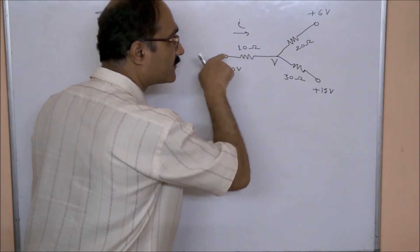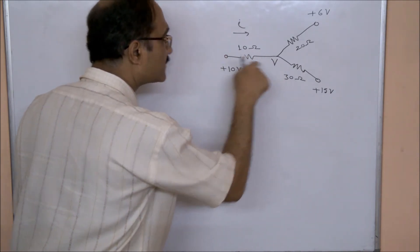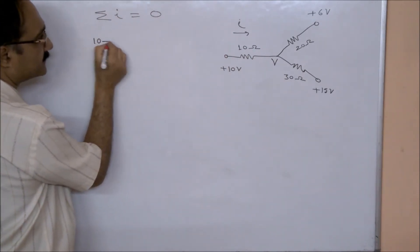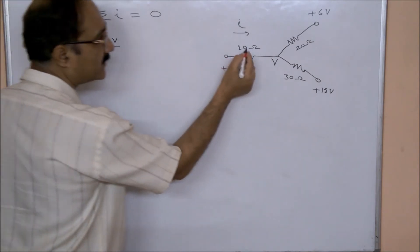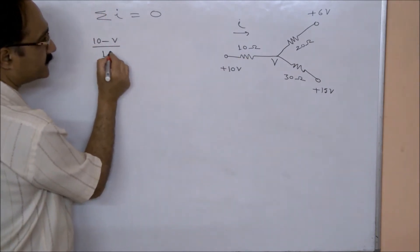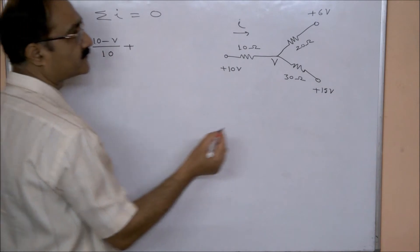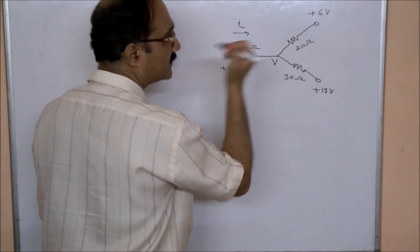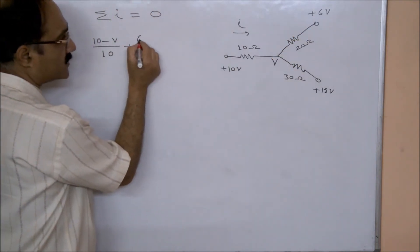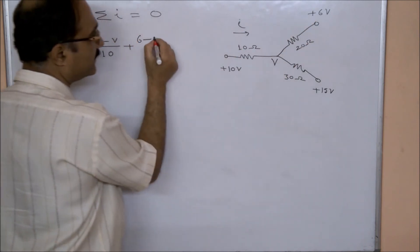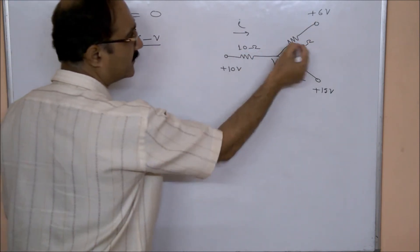Current coming from this side will be (10 - V) divided by 10 ohms, plus current coming from this side, so (6 - V) divided by 20...